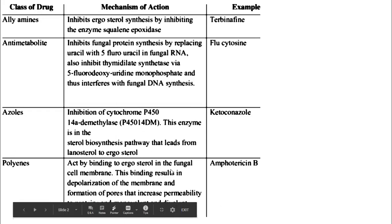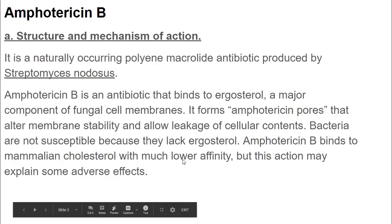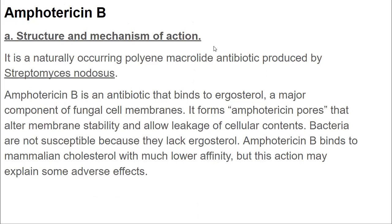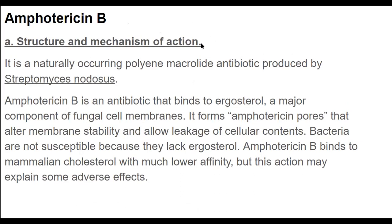Starting with the first one, amphotericin B. Looking at the structure and mechanism of action: it is a naturally occurring polyene macrolide antibiotic produced by Streptomyces nodosus. Amphotericin B is an antibiotic that binds to ergosterol, a major component of the fungal cell membrane.